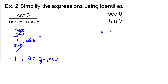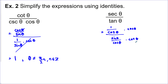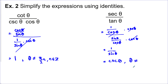Next, we've got secant theta — that could be replaced with 1 over cos theta. Now we've got tan theta, which could be replaced with sine theta over cos theta. If we multiply numerator and denominator by cos theta, we can get rid of all the cosines, and we're just left with 1 over sine theta. You could write it as cosecant theta if you prefer. We have to record our non-permissible values: cos is in the denominator and sine is in the denominator, so theta cannot equal pi over 2n, where n is an integer.